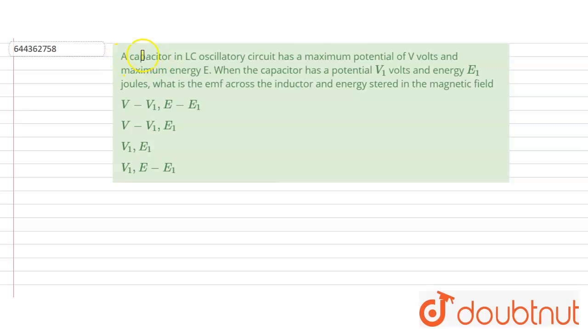Hello everyone, let's start the question. The question is, the capacitor in LC oscillatory circuit has a maximum potential of V volts and maximum energy E. When the capacitor has potential V1 volts and energy E1 joules, what is the emf across the inductor and the energy stored in the magnetic field?